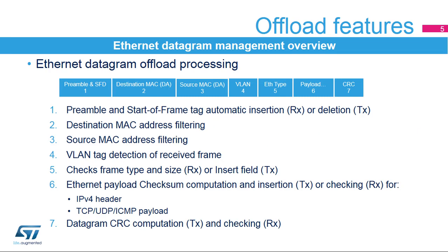This slide presents the offload processing managed by the peripheral on an Ethernet datagram. Most of the non-payload part of the datagram is efficiently managed in hardware. The preamble and SFD are basic synchronization patterns and are inserted or deleted automatically. MAC address filtering is recommended to select only the frames that are relevant for your application, with multiple filtering options for unicast or multicast address frames, and perfect or hash filtering.